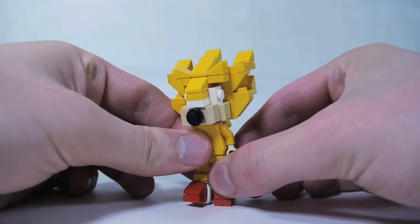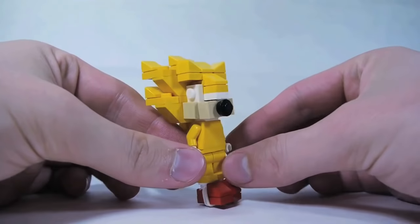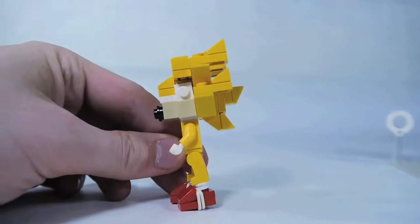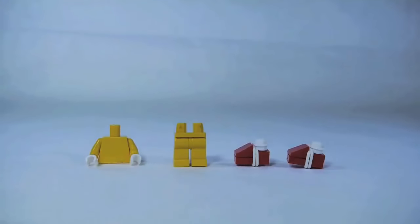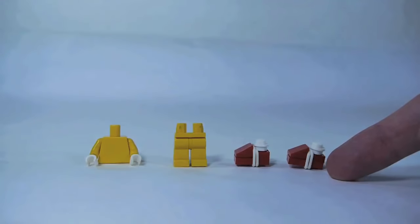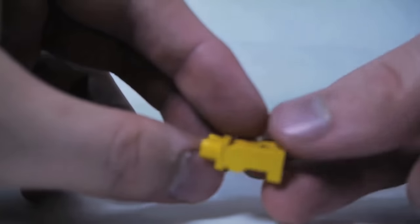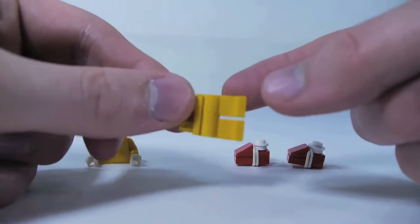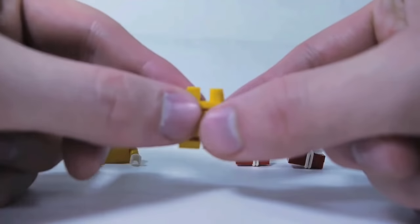So once Sonic collects all the Chaos Emeralds, then he becomes Super Sonic. So the shoes are going to be constructed the same as Sonic's shoes, so either steal those from Sonic or just rebuild another copy. The pants, if you can find a set of pure yellow pants, that's great. I had to construct these.